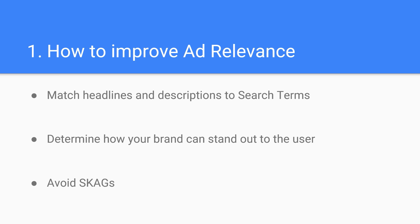Match these responsive search ads with expanded text ad placements. Google does give some reporting on headlines and descriptions, including ranking them from low to best in terms of performance. If you've found a winning ad copy that performs well, you could also pin your top performing headlines to the top of your responsive search ads, ensuring that it always shows up in your ad.